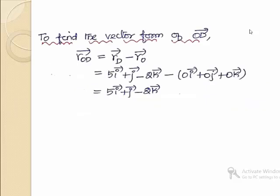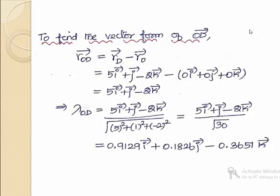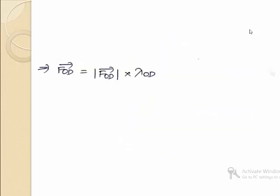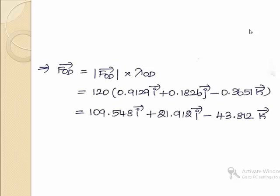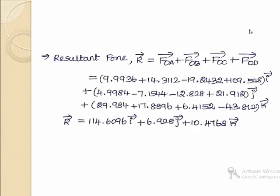For the fourth force along OD, the position vector is 5i + j - 2k. The unit vector along OD is 0.9129i + 0.1826j - 0.3651k. The fourth force vector FOD is 109.548i + 21.912j - 43.812k. The resultant force R = FOA + FOB + FOC + FOD, giving R = 114.6096i + 6.928j + 10.4768k.